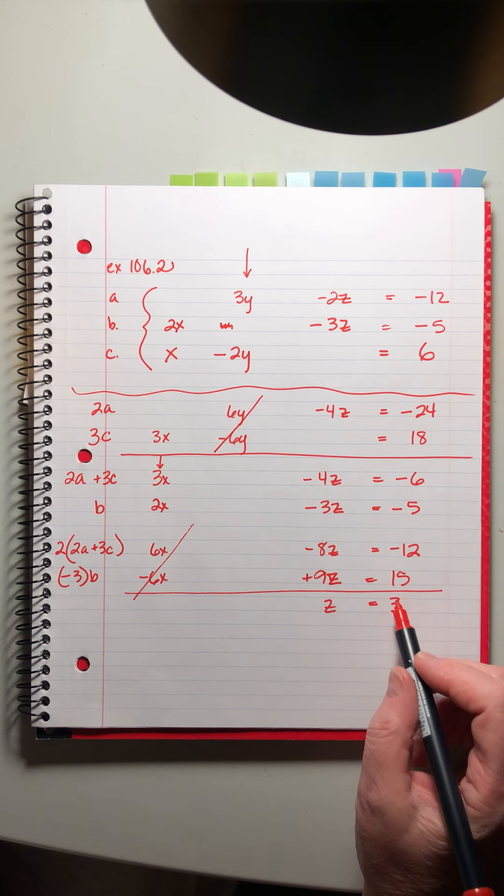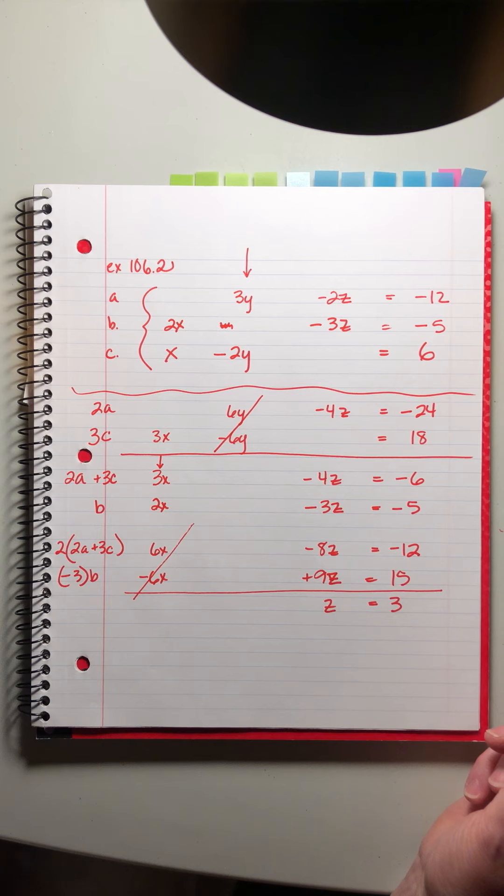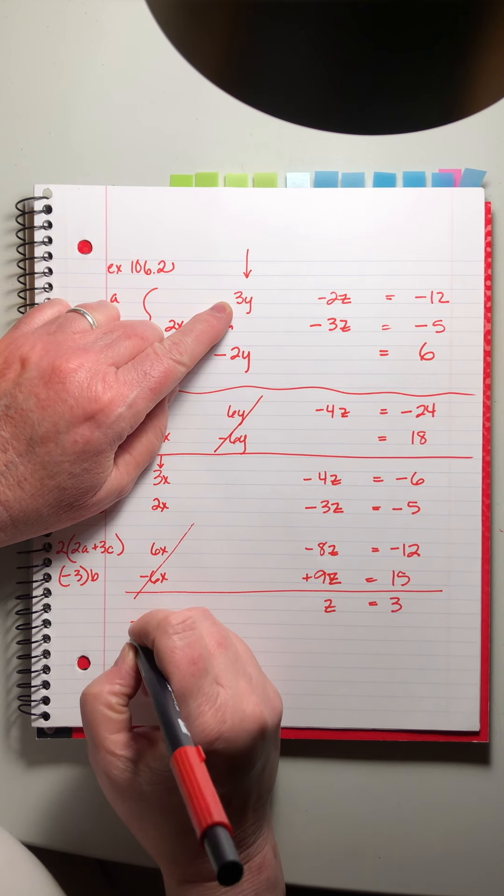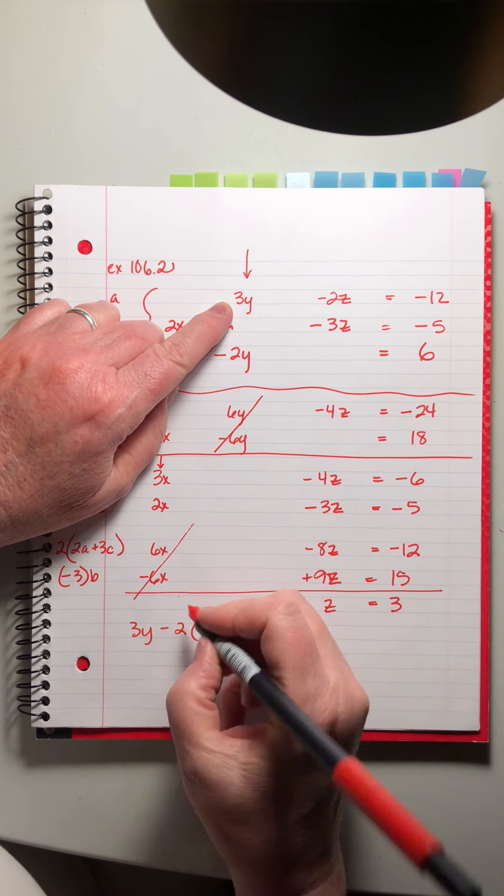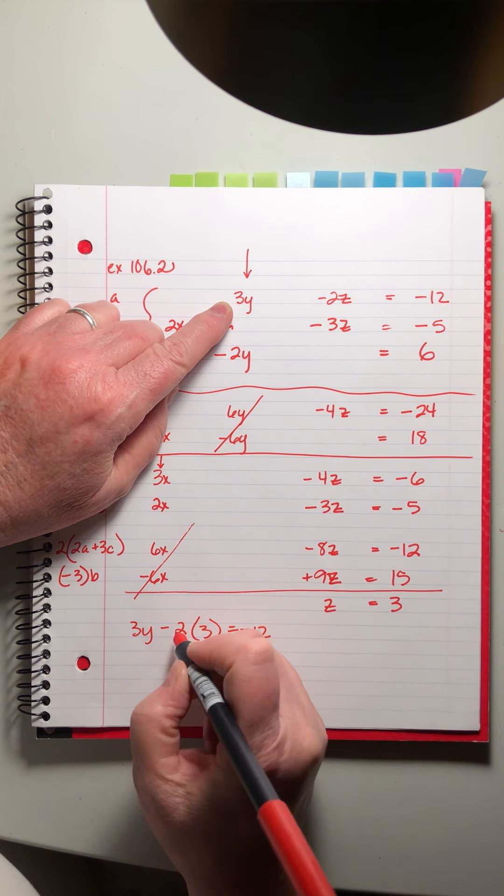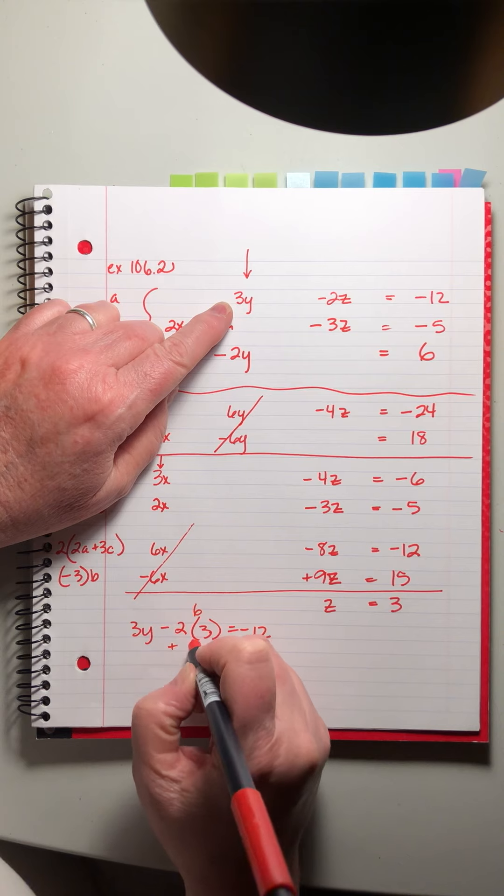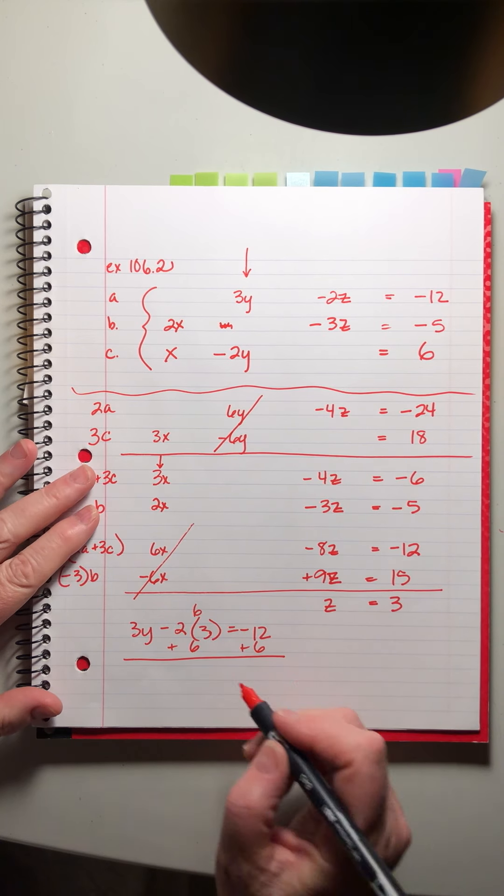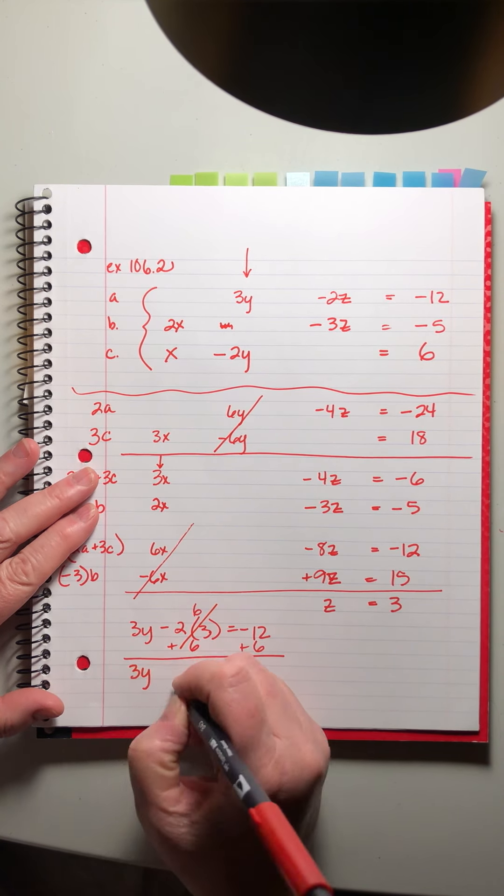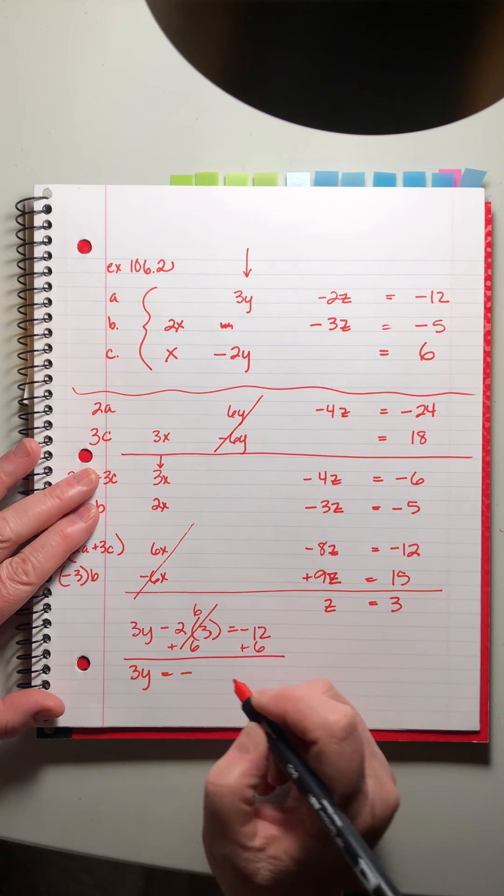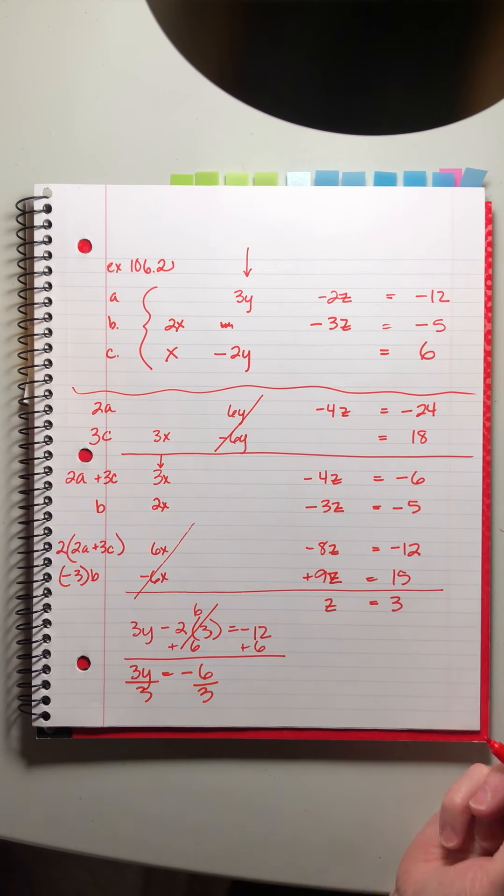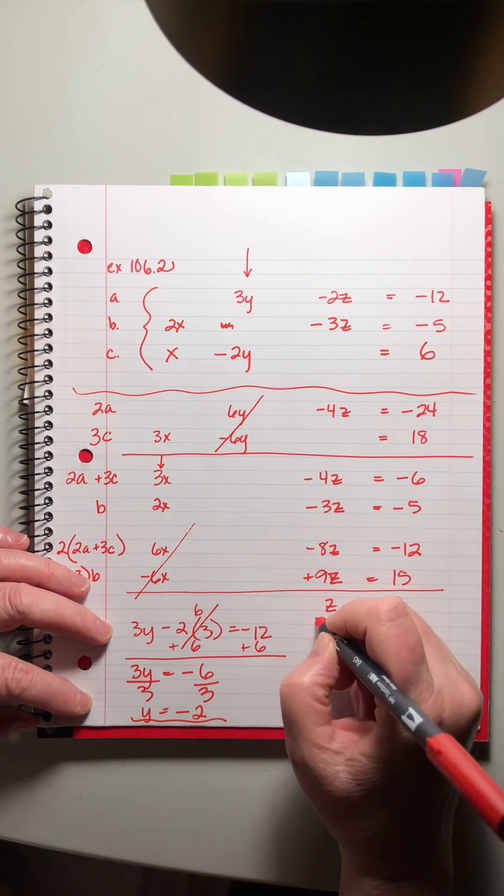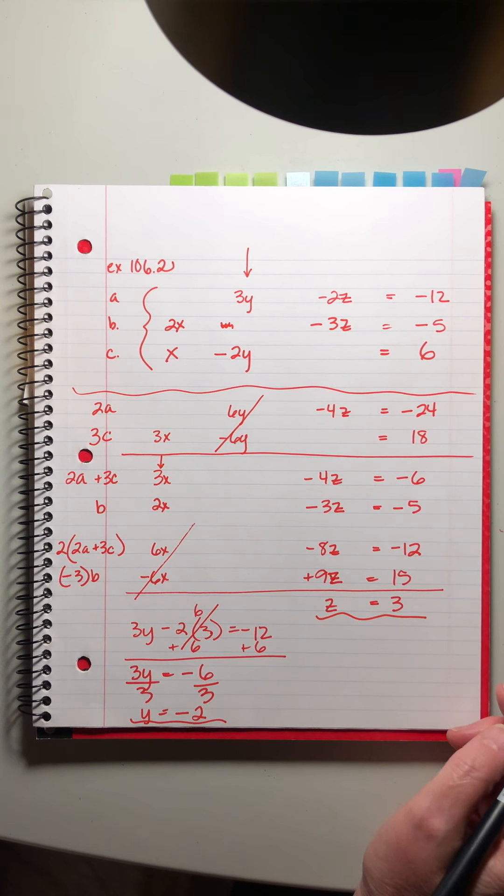All right which one do we want to use now to solve for x and y? Anything is fine. Let's do y next. 3y minus 2 times z which is 3 equals negative 12. So this is 6. We can add 6 to both sides. I hope you're following my algebra. I'm whizzing through it. I'm just doing simple algebra to solve these. That cancels. 3y equals negative 6. And I get y equals negative 2.